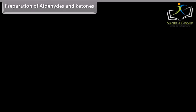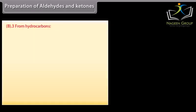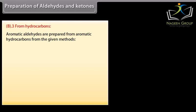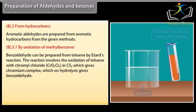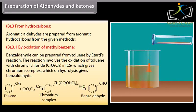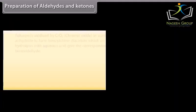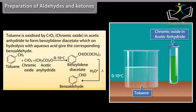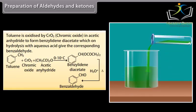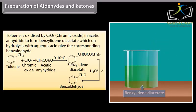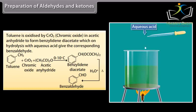Aromatic aldehydes are prepared from aromatic hydrocarbons by the following methods. By oxidation of methylbenzene: benzaldehyde can be prepared from toluene by Étard's reaction. The reaction involves the oxidation of toluene with chromyl chloride in carbon disulfide, which gives a chromium complex that on hydrolysis gives benzaldehyde. Toluene is also oxidized by chromic oxide in acetic anhydride to form benzaldehyde diacetate, which on hydrolysis with aqueous acid gives the corresponding benzaldehyde.